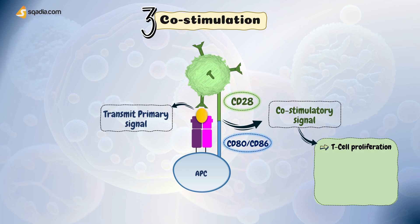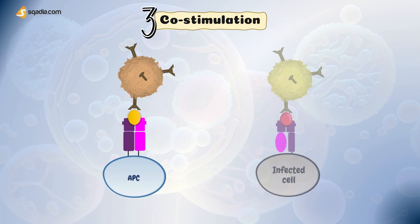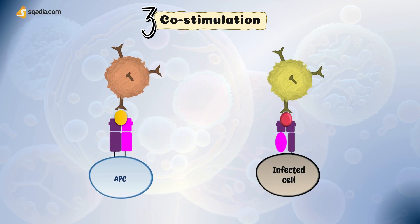The engagement of CD28 with CD80 or CD86 provides a co-stimulatory signal that amplifies T-cell activation. This signal enhances T-cell proliferation, survival, cytokine production, and expression of effector molecules. CD28 engagement also promotes the differentiation of naive T-cells into effector T-cells.